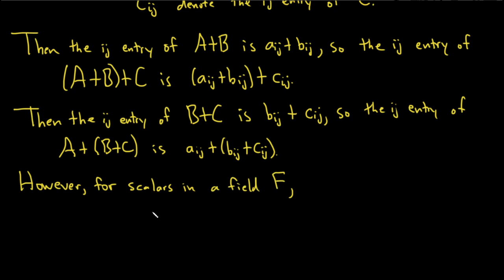we have that a_ij + (b_ij + c_ij) is equal to (a_ij + b_ij) + c_ij by associativity.